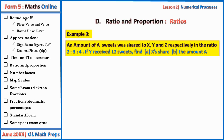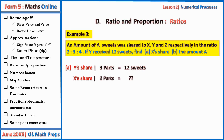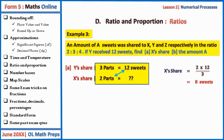We can use ratios to solve this directly. Y's share of three parts corresponds to 12 sweets, and X's share of two parts equals an unknown amount. Cross-multiplying: X's share = 2 × 12 ÷ 3 = 8 sweets. This is a direct one-step method.